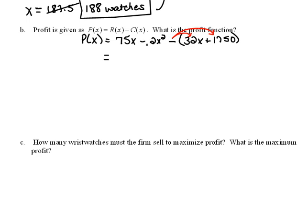So now let's clean this up. This is going to be 75x minus 0.2x squared minus 32x minus 1750.